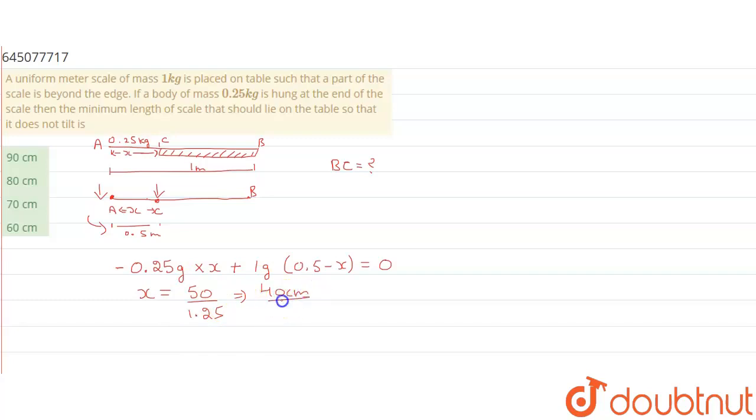Now the value of BC which they are asking is 100 centimeter, that is 1 meter, minus 40 centimeter which comes out to be 60 centimeter. And according to the option, option D is the correct choice.